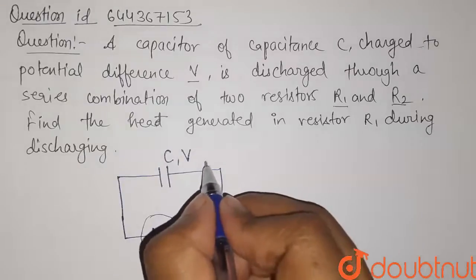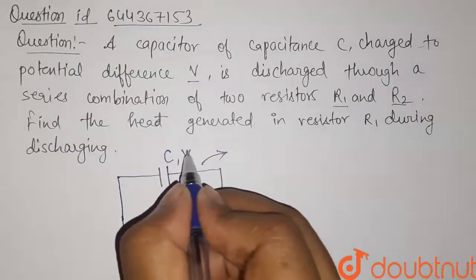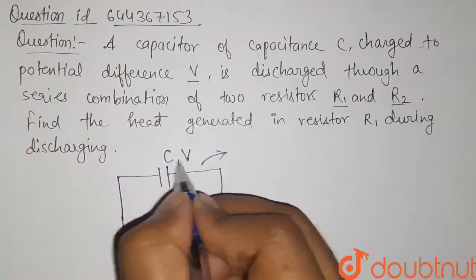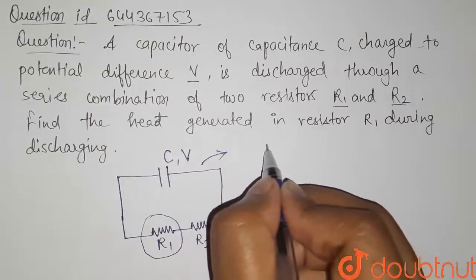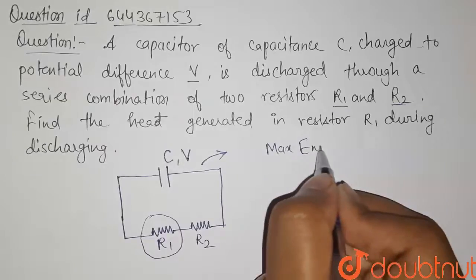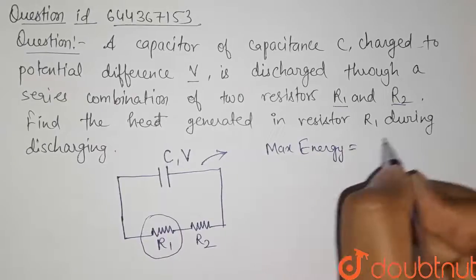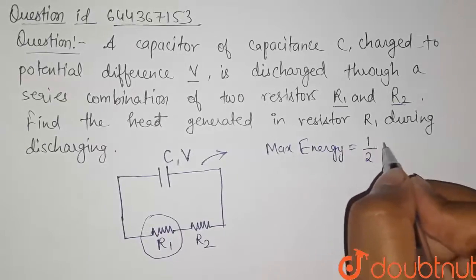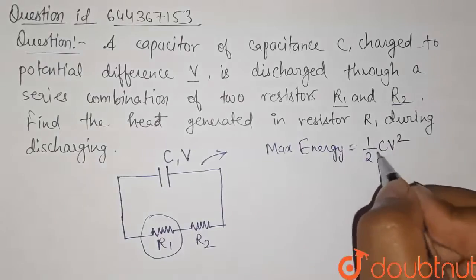So first of all we have the maximum energy stored in this capacitor is maximum energy equals 1 by 2 into CV square.